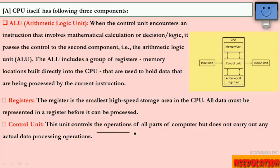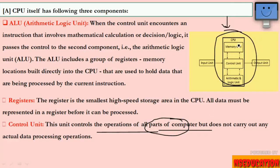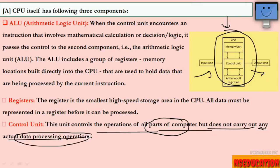The control unit controls the operation of all parts of the computer. But it does not carry out any actual data processing operation. For example, 2+2 is not done by the control unit — it is done by the Arithmetic and Logic Unit. The control unit only controls; it does not process data.